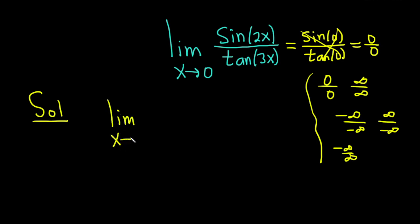As x approaches 0, we're just going to take the derivative. So the derivative of the sine is cosine. We have a 2x, so we have to use the chain rule. We take the derivative of the outside.